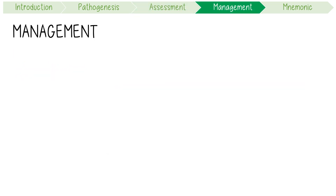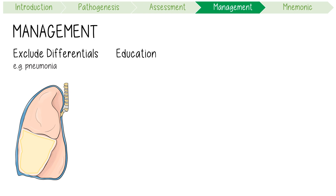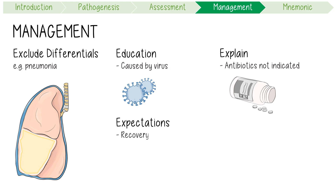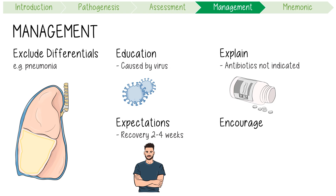The management of acute bronchitis is relatively simple. Exclude important differentials like pneumonia. Provide education that it's a self-limiting condition caused by viruses in 90% of cases, and explain that antibiotics are not indicated as a result. Set expectations about recovery — for example, the cough on average lasts two to three weeks, and 90% of patients have cough resolution by four weeks. Finally, encourage the patient to represent if they clinically deteriorate.